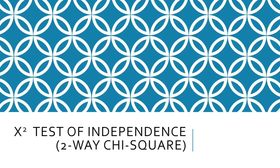Let's tackle something new now. This is a chi-square test of independence, sometimes called the two-way chi-square. The two-way means there will be two variables being analyzed at once. But this is very different from the chi-square goodness of fit test.